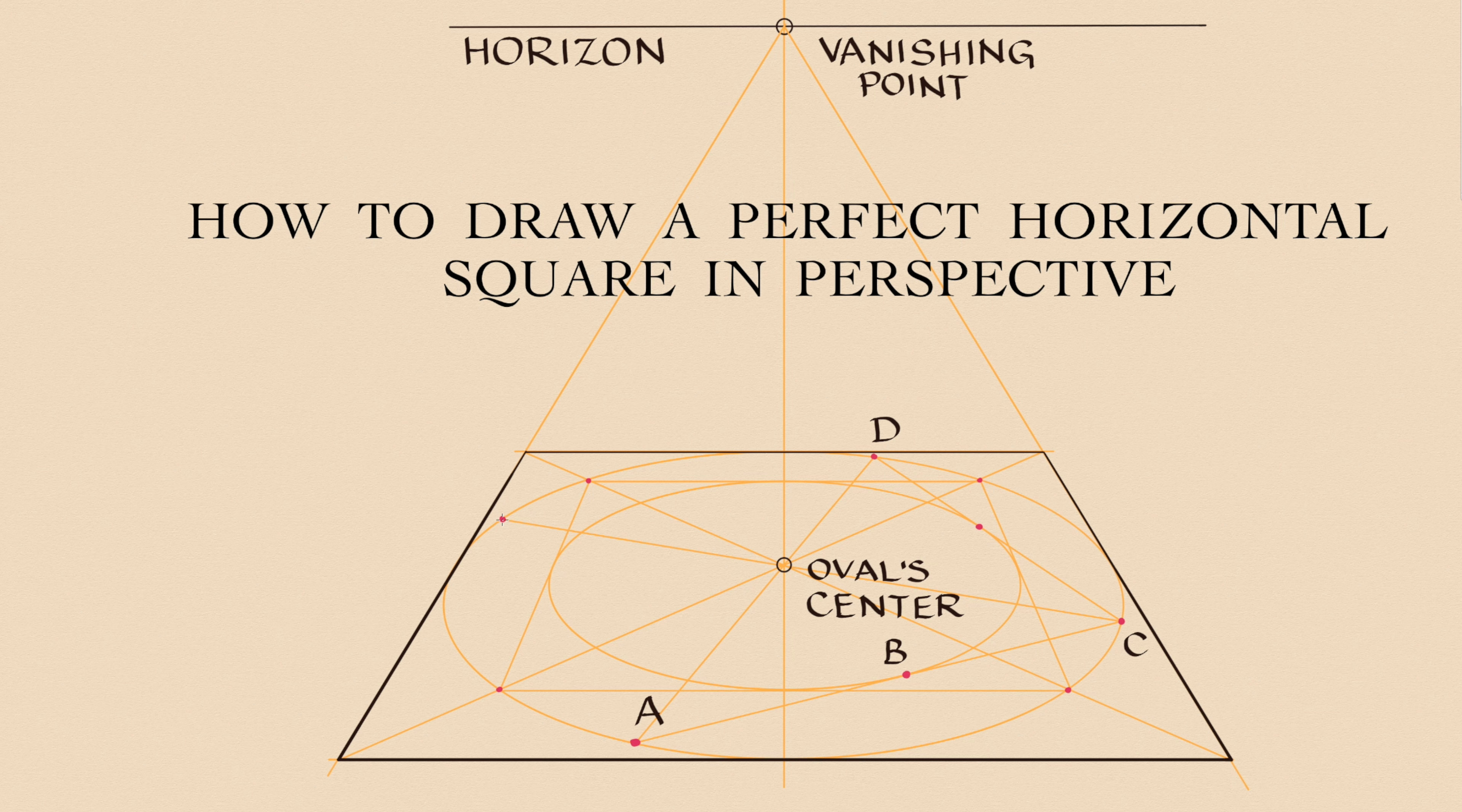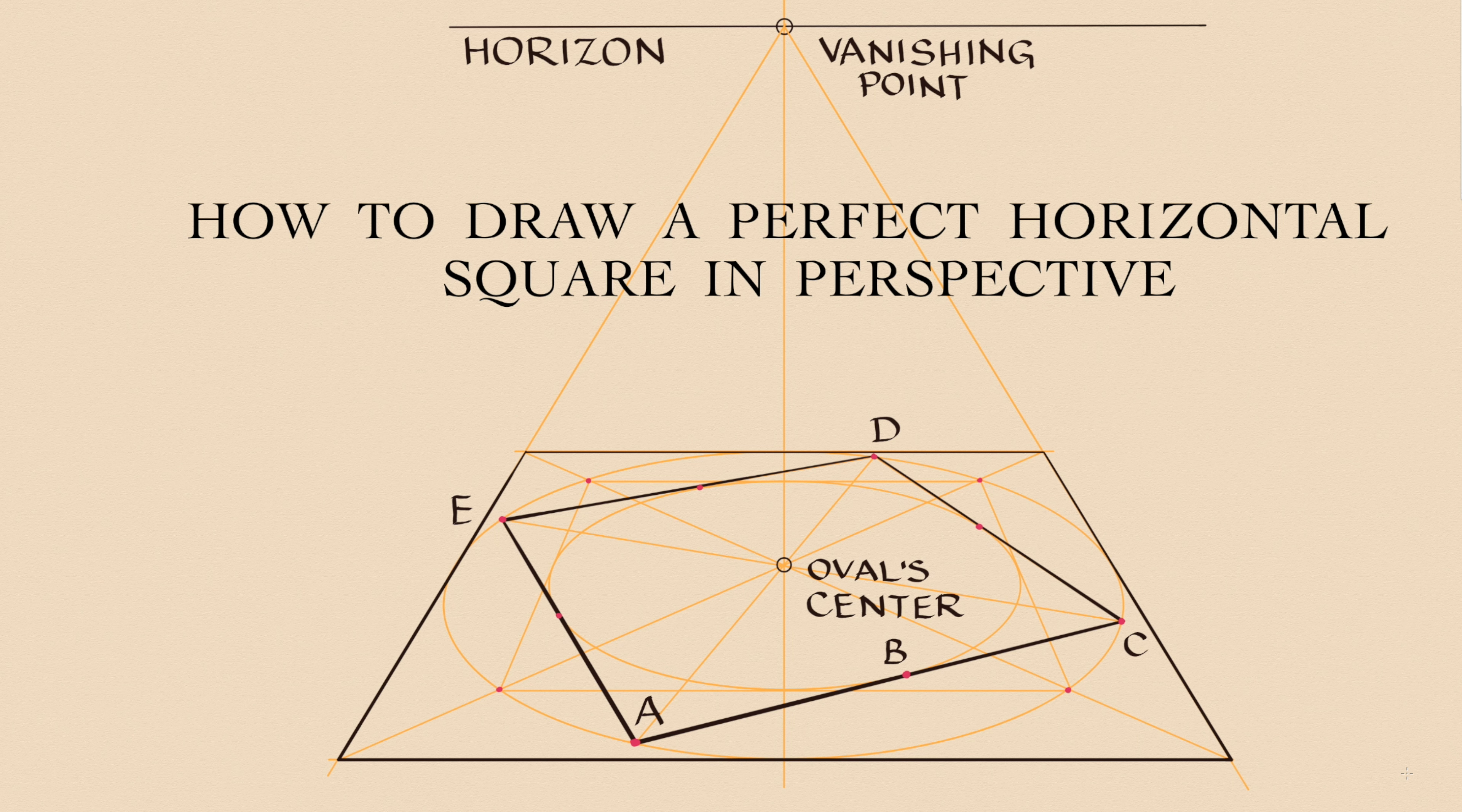Another line from the point C goes through the oval's center and reaches the opposite side in the point E. Points A, E and D can be connected together. This gives us a perfect square in two point perspective. We know this square is perfect because a perfectly horizontal ellipse is inscribed inside of it.